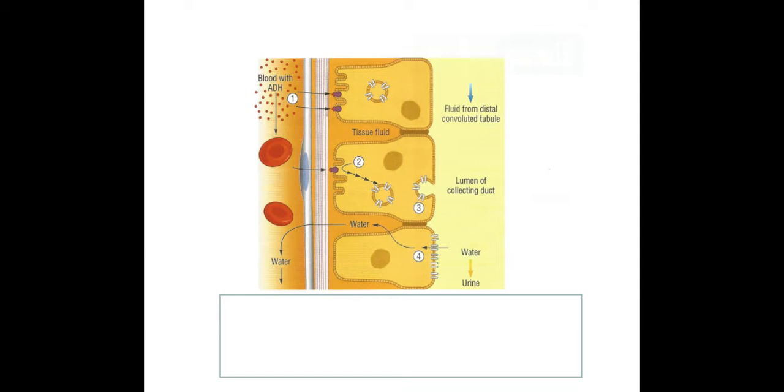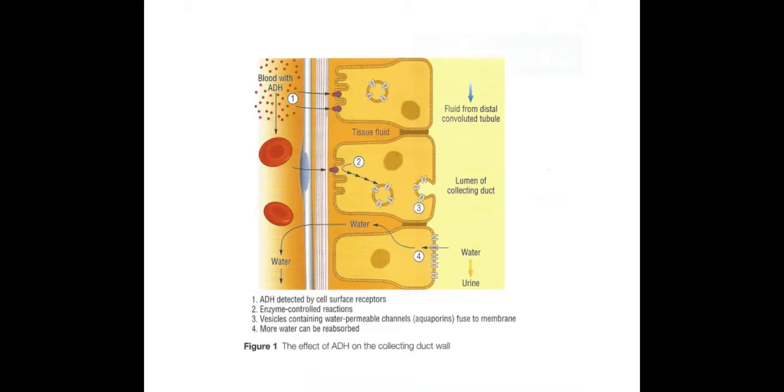So this is what's going on when ADH arrives near the collecting duct. If you want to pause it and try and figure out what's going on, it's probably a good idea. But the first thing that happens here is that blood containing ADH will arrive in the cells that surround my collecting duct.